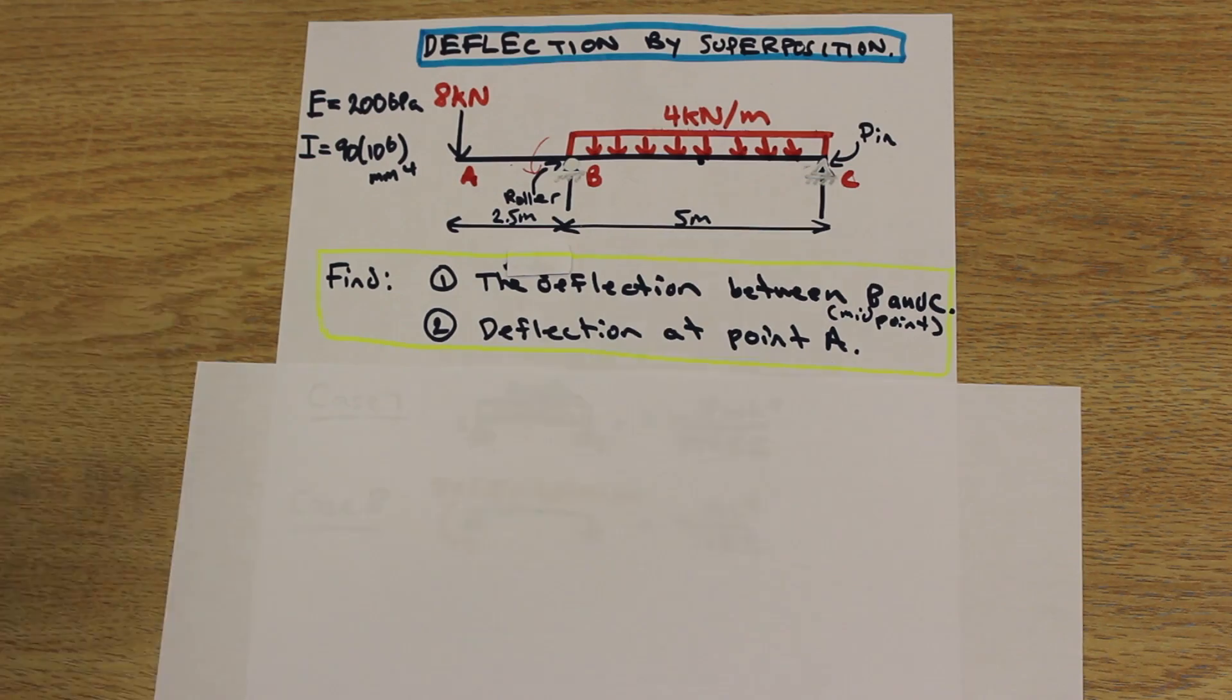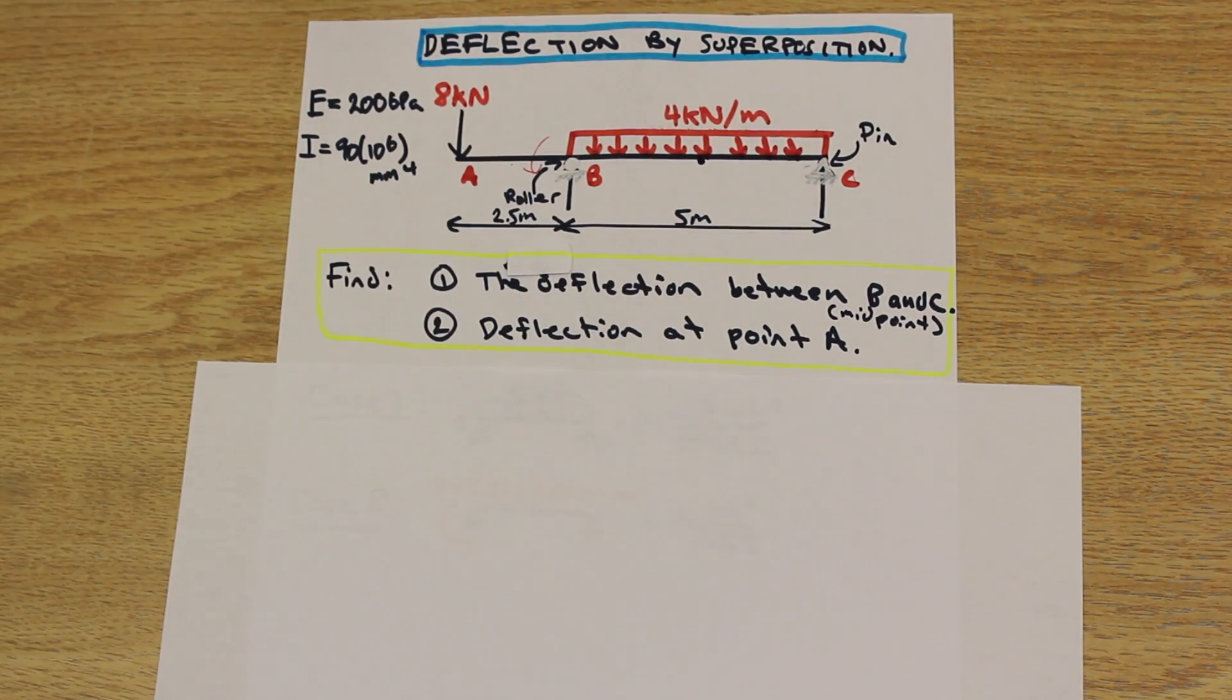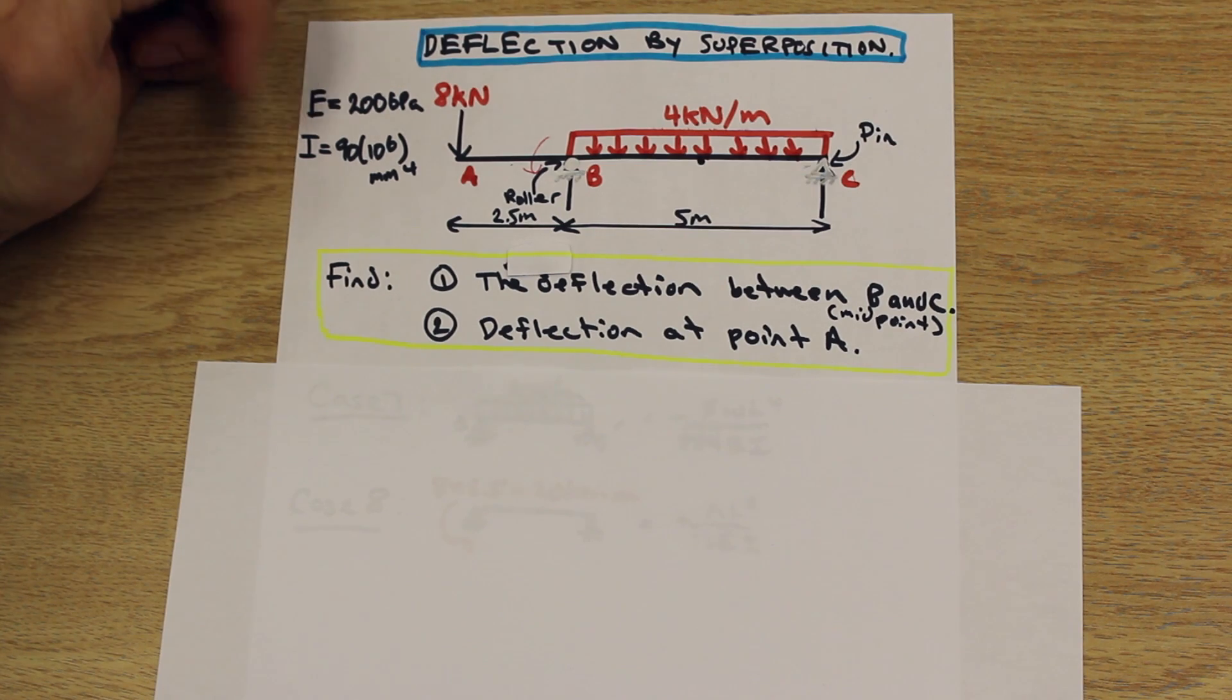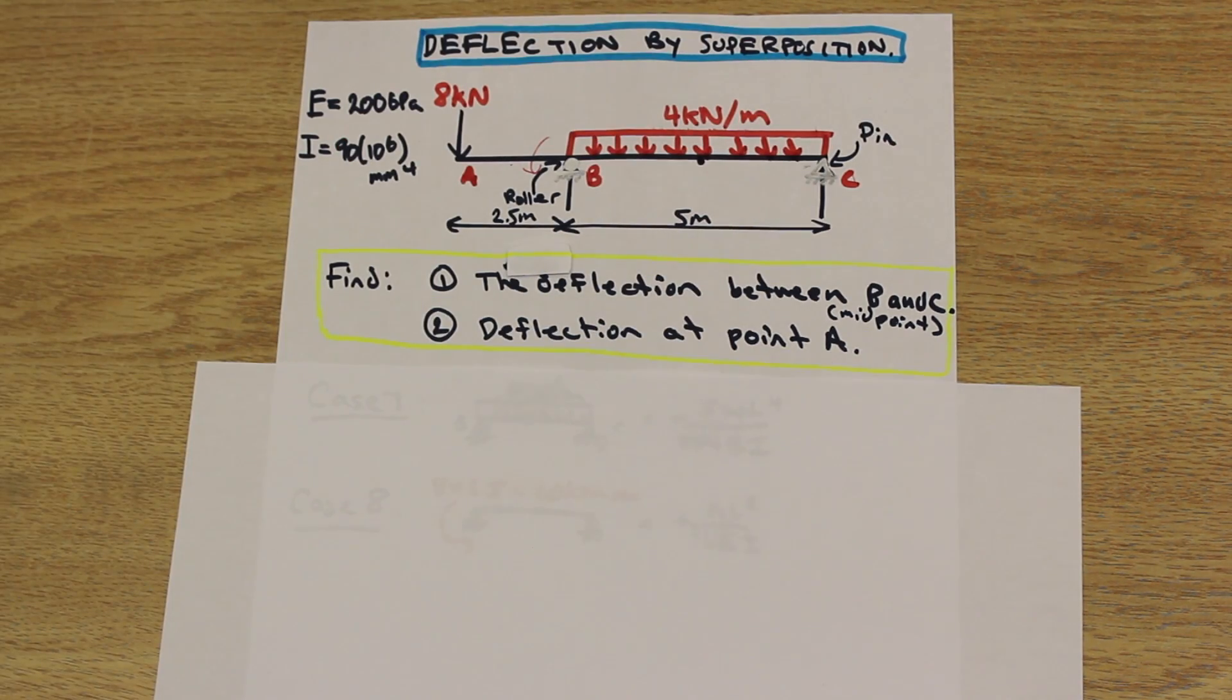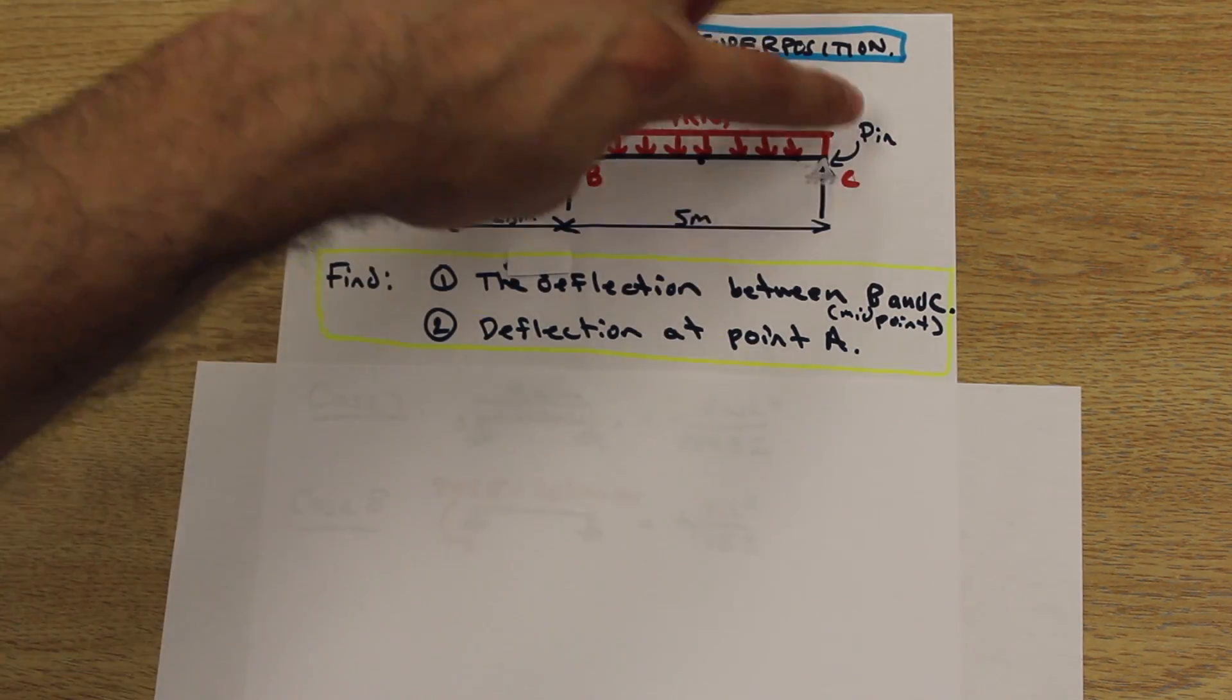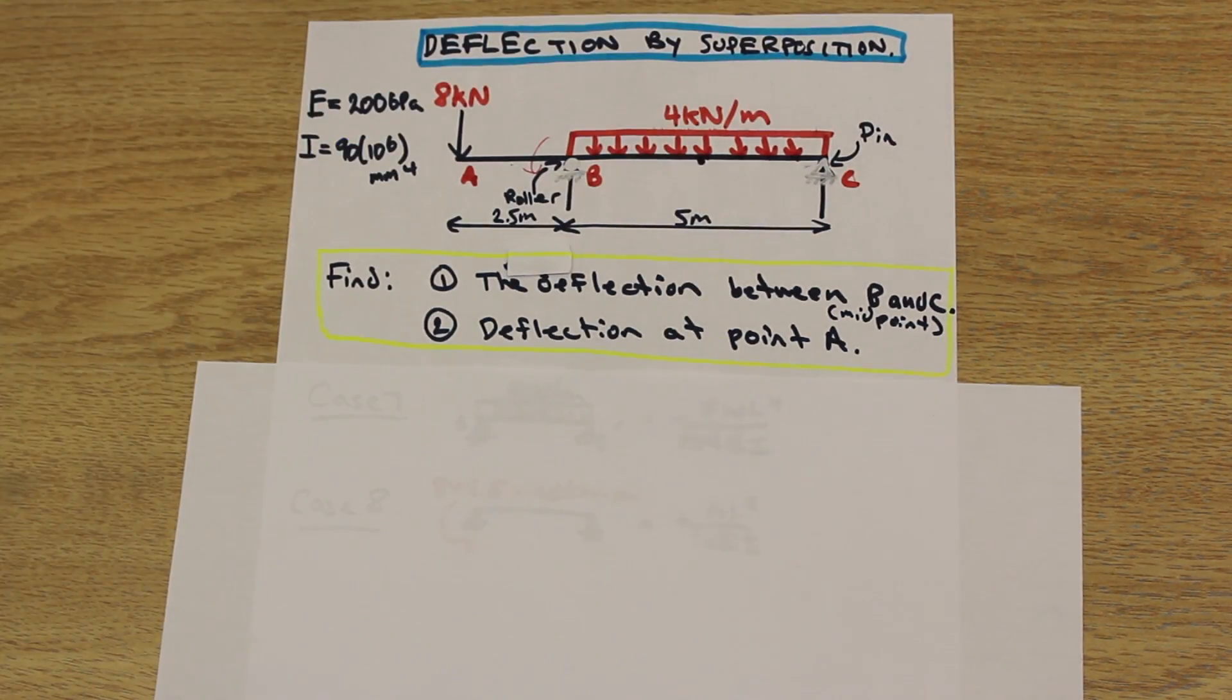So let's talk about what the question's asking. We're given our E and our I, our moment of inertia and our modulus of elasticity. If you remember in the deflection video by integration, those weren't given, those were constant. In this case, they are. So we're going to sub those in later when we're finding the deflection.